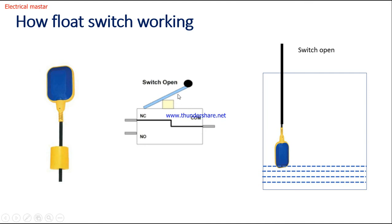When the float comes to the vertical position, the switch will be open. At that time, whatever common supply you are giving, you can receive it from the NC terminal. This switch open position is used to turn on the water pump. Now you understand how the float switch works — the closing condition and opening condition.